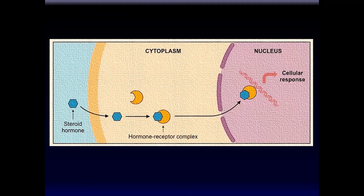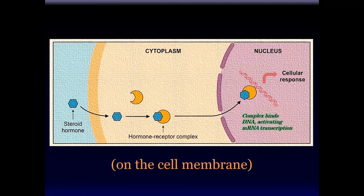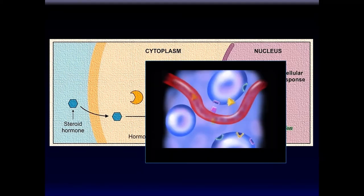Taking an example from human physiology: a steroid hormone, when it reaches the target cell, diffuses into the cell, and the receptors are in fact inside the cell. The hormone-receptor complex then moves to the nucleus, where it binds to DNA, activating messenger RNA transcription. In this case the hormone receptor is inside the cell. Many times the hormone receptor is on the outside of the cell, and hormones affect the functioning of the cell in different ways. Hormones will only affect the cells that have the receptors for them.